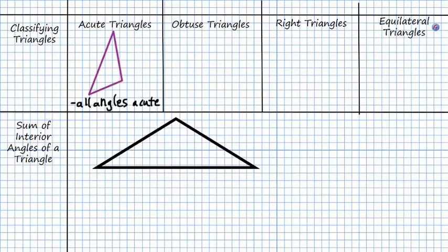We can make an obtuse angle, and an obtuse triangle has a single obtuse angle in it. We can have a right triangle, which as you guys know, is simply a triangle that has a right angle in it.